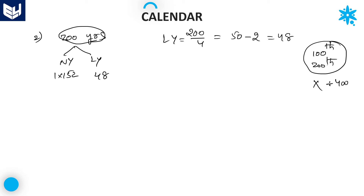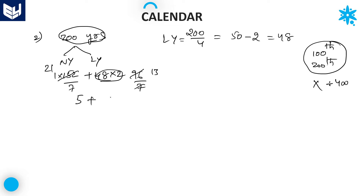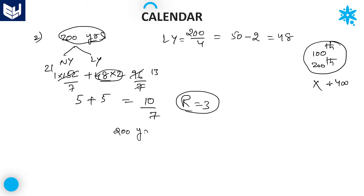Every normal year consists of 1 odd day and every leap year consists of 2 odd days. So we calculate 152 divided by 7: the remainder is 5. And 96 divided by 7: the remainder is also 5. Adding: 5 + 5 = 10. Since 10 is greater than 7, divide 10 by 7, giving remainder 3. Therefore, number of odd days in 200 years is equal to 3.